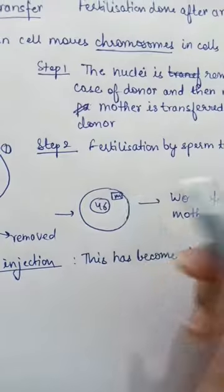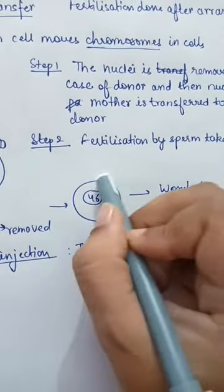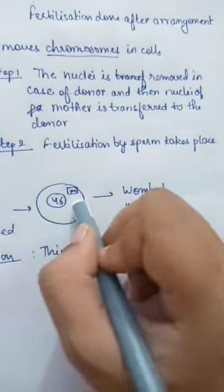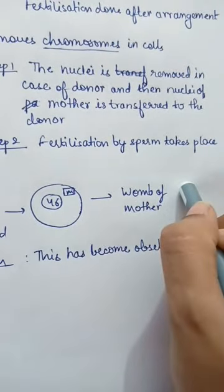Now you will have 46 chromosomes, the mitochondria is from the donor, and we will transfer this to the womb of the mother.